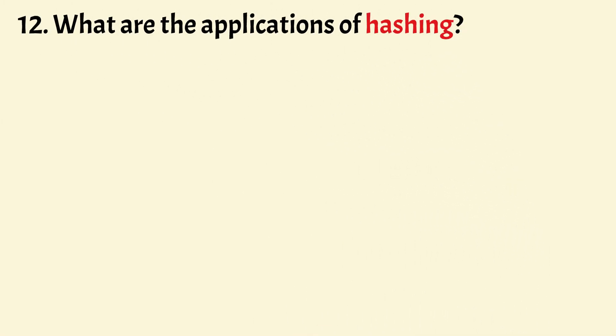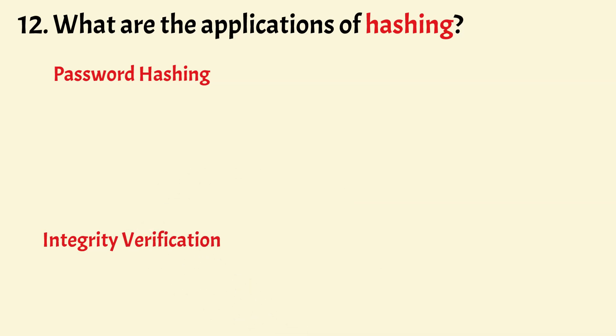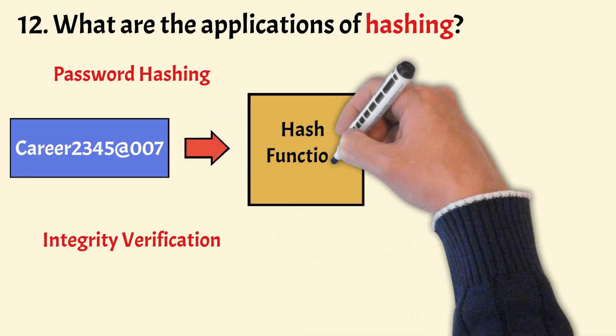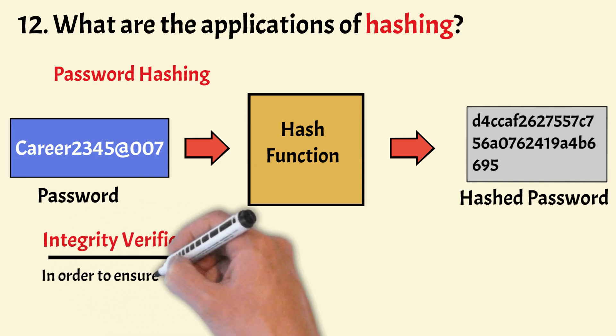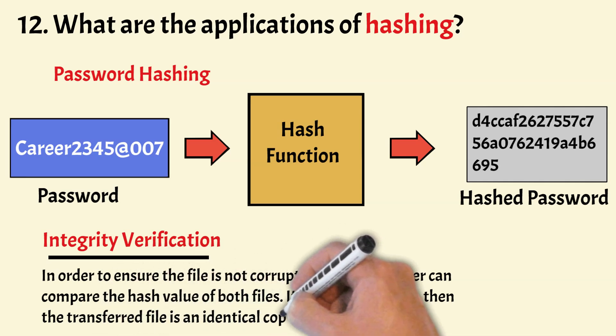What are the applications of hashing? The two primary applications are password hashing and integrity verification. In most applications, passwords are not stored as plain text in the database for security reasons, but are first converted into a hash and then the hash is stored. While logging in, when a user types a password, it is first converted into a hash and then compared with the stored hash in the database — if they match, the user provided the correct password. Hashing is also used to verify the integrity of a document; a user can compare the hash values of both files, and if they are the same, the transferred file is an identical copy.